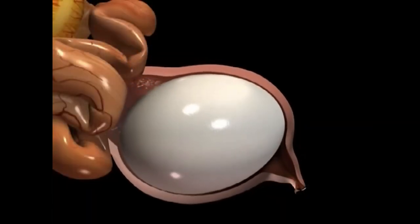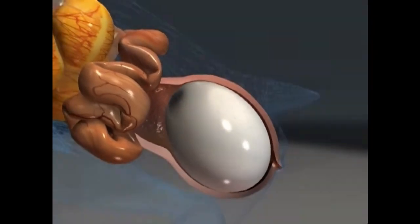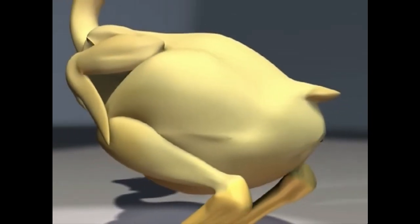Finally, in a process called oviposition, the egg flips end over end. This occurs through contractions of the uterus, synchronized with relaxation of the muscular vagina, and pushes the egg out of the hen's body.